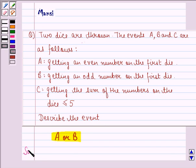So, let us see the solution to this question. Now event A or B is same as the event A union B.